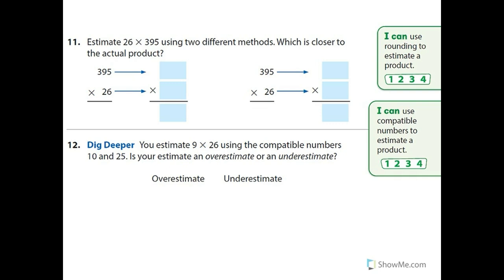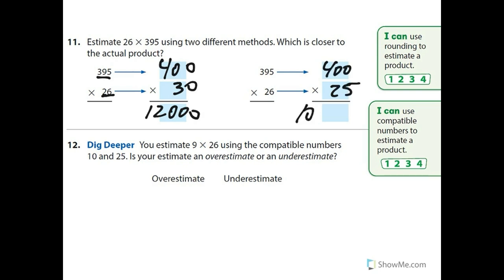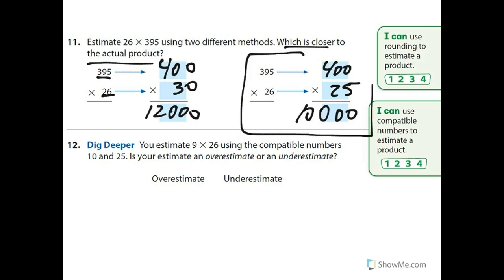I'm going to do two different methods here. First, rounding to the nearest 10: 400 times 30, that's going to be 12 with three zeros — 12,000. Then I'm going to try compatible numbers: 425 and 25, that's 100 with two zeros — 10,000. It asks which is closer to the actual product. I'm going to say 10,000, because 400 appears in both, but 25 is closer to the actual factor than 30 is.